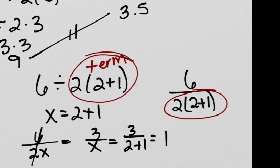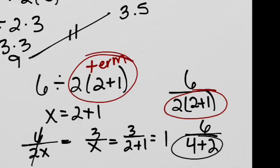If we were to distribute this again, we would get 6 divided by 4 plus 2. Here, we would have to do this entire denominator first, giving us 6 divided by 6, which is, again, that interesting number we got, 1.